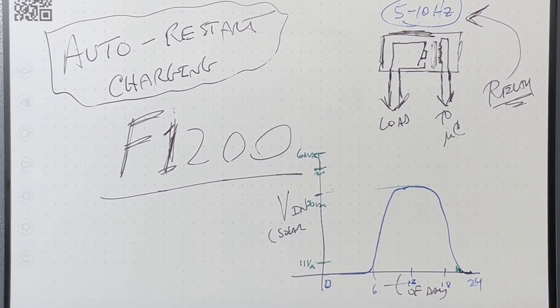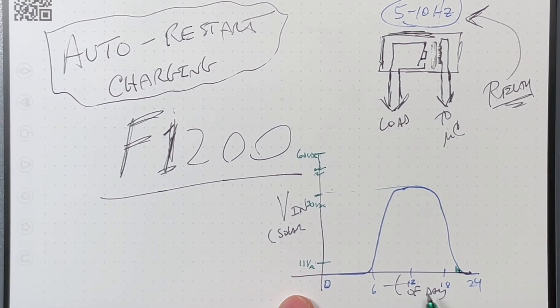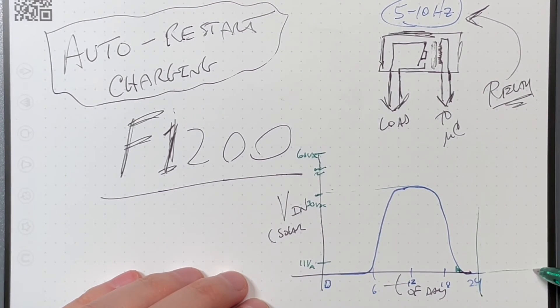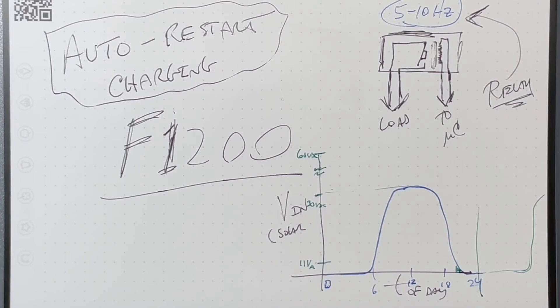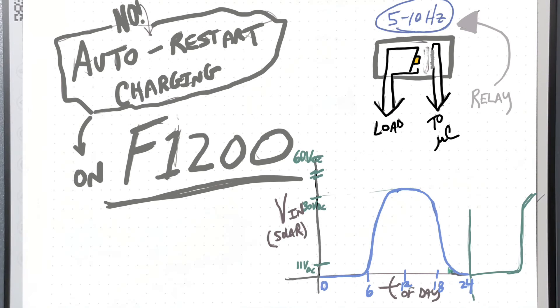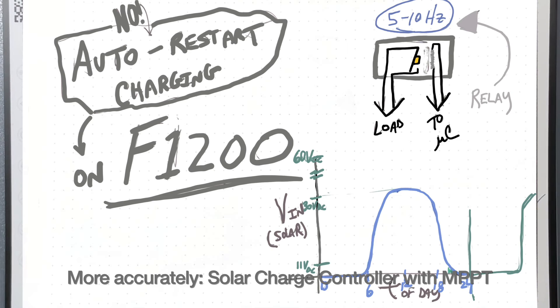So the last thing I wanted to talk about is auto-restart charging. I'm going to use the same graph. What happens with the F1200 is that it doesn't resume charging the next day. If you plug it in during day zero, and then you run through that entire day, you get to midnight, and you go into the next day, and then the sun comes out and it's all shiny and bright and full voltage on your panels, no current's going to flow. It won't restart charging the next day. Now, if it gets cloudy during the day and the input power drops to zero, it will just sit, because it seems as though even though there's no current being pulled, the MPPT charge controller can see that there is a voltage on the panels.